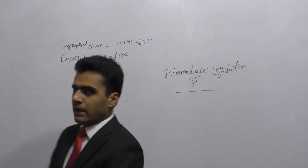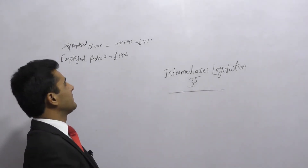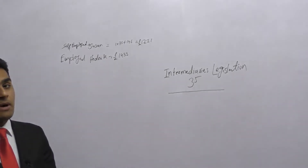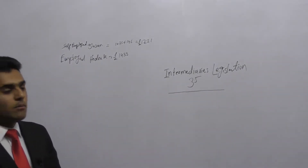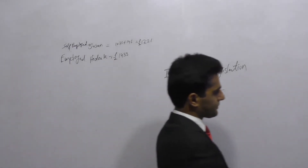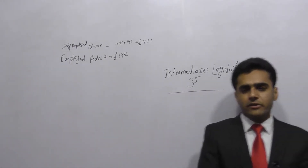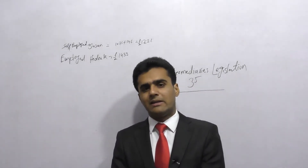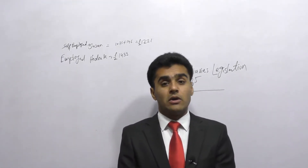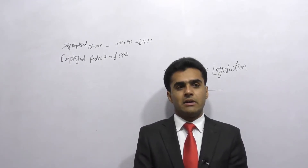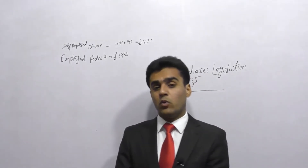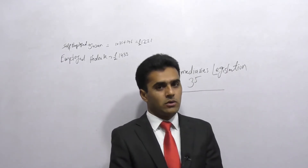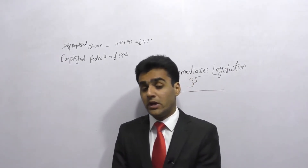If you are self-employed you will have to pay less national insurance contribution, whereas if you are employed on the same amount of salary you will have to pay more national insurance contribution. That is the main reason why we need to differentiate between self-employed and employed — there is a possibility that someone who is employed could show themselves as self-employed.